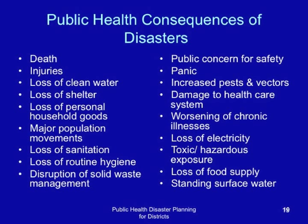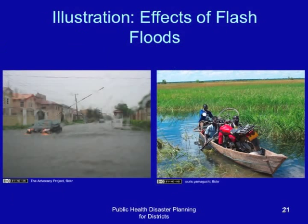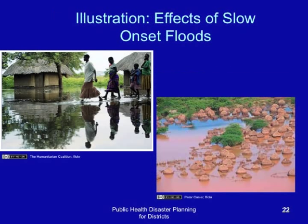This is a pictorial presentation of some of the consequences of drought and famine. This is an illustration of some of the effects of flash floods. This is an illustration of some of the effects of slow onset floods. This is an illustration of some of the effects of landslides.